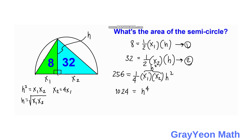Now, 1024 can be written as 2 raised to the 10th power. We take the fourth root of both sides, so h equals 2 raised to the power of 10 over 4, which simplifies to 2 raised to 5 over 2, giving us h equals 2 to the 5/2.